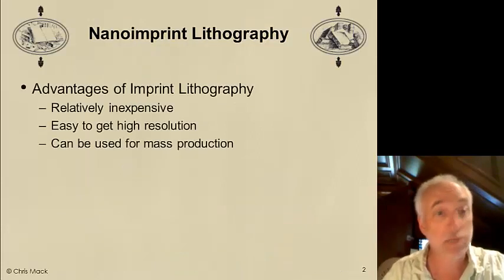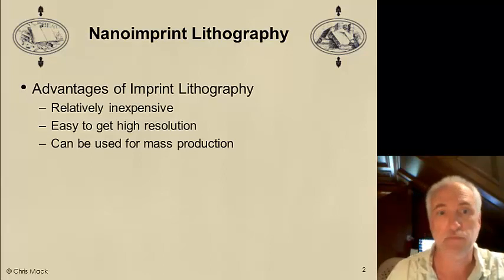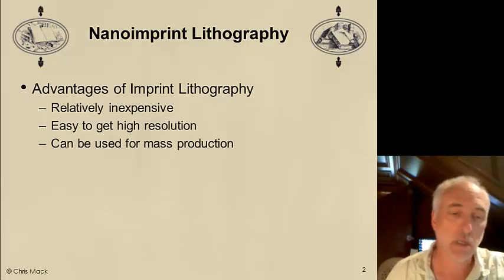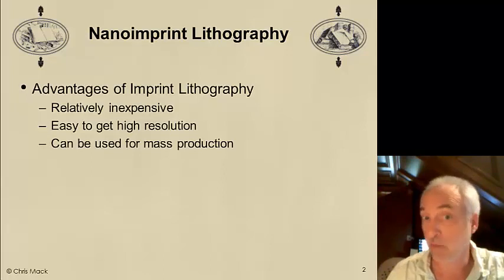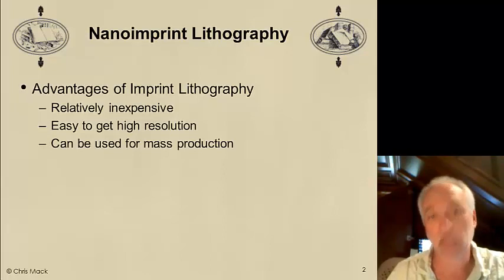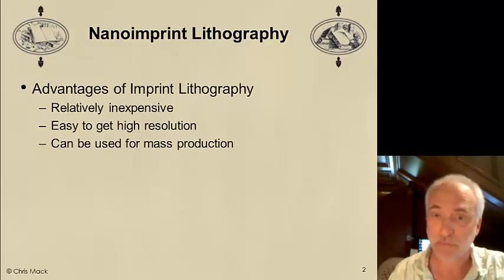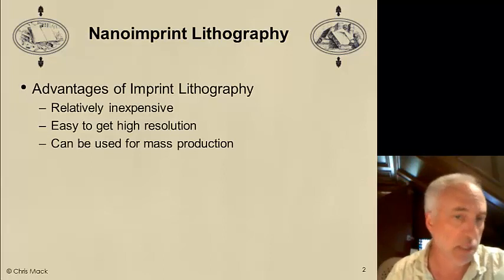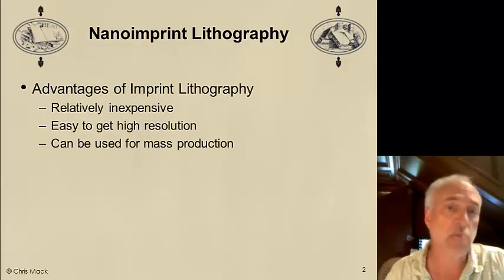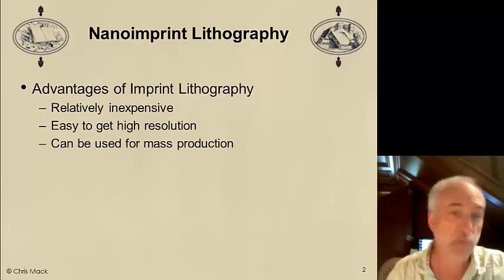Last time, we talked about some of the advantages of imprint lithography. It's relatively inexpensive and relatively easy to get fairly high resolution. It took a lot of work to get to sub-100 nanometer resolution with optical lithography, but much less work was required with imprint lithography. People have even demonstrated 10 nanometer resolution, so it has very high resolution capability, and it can be used for mass production — printing over fairly large areas and very quickly.